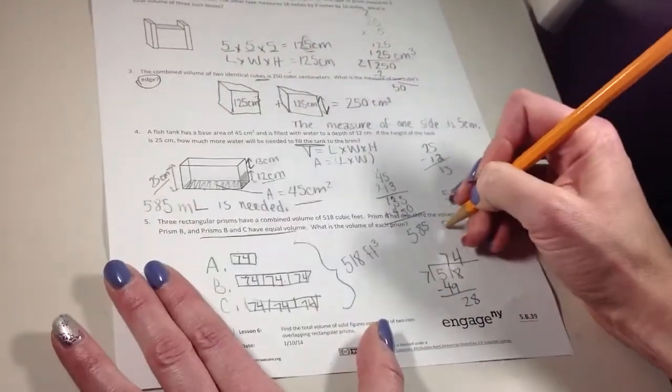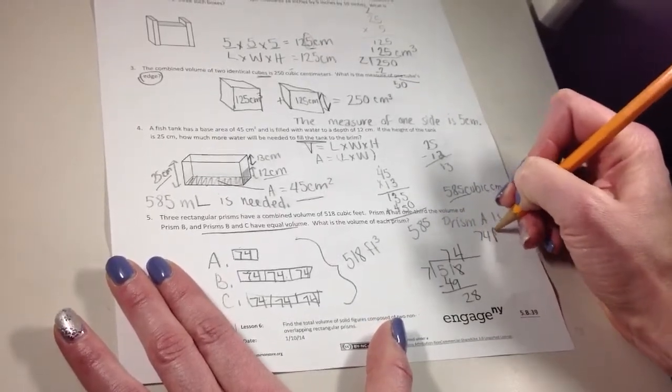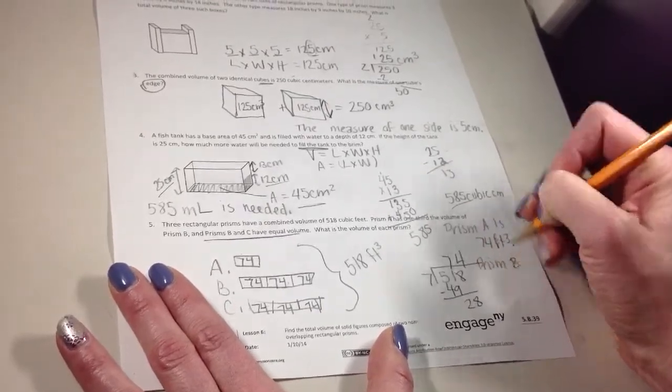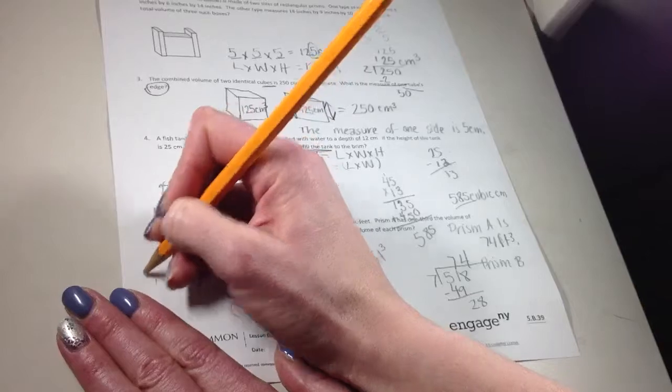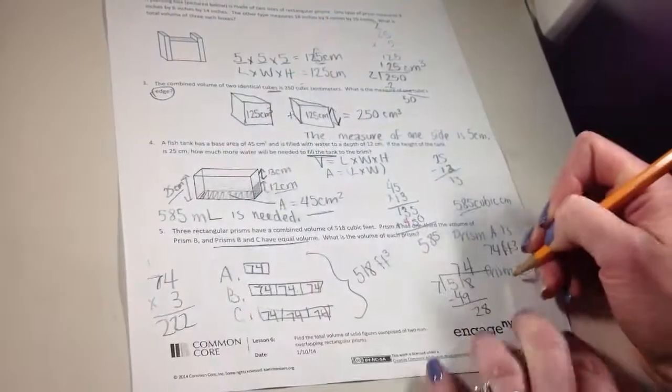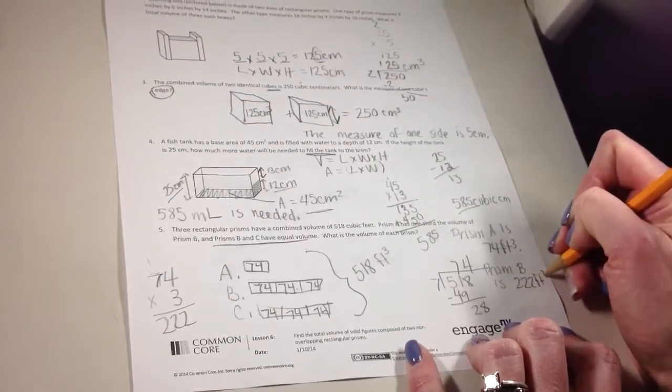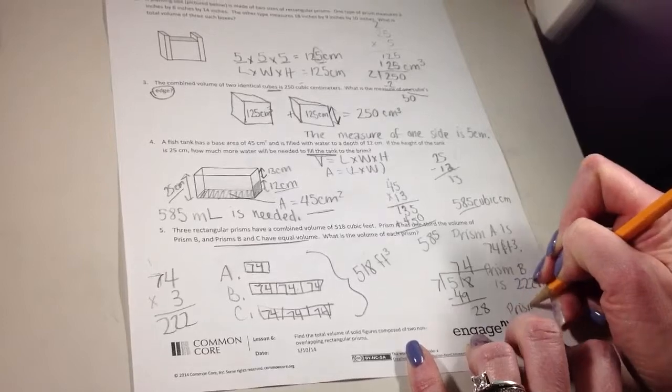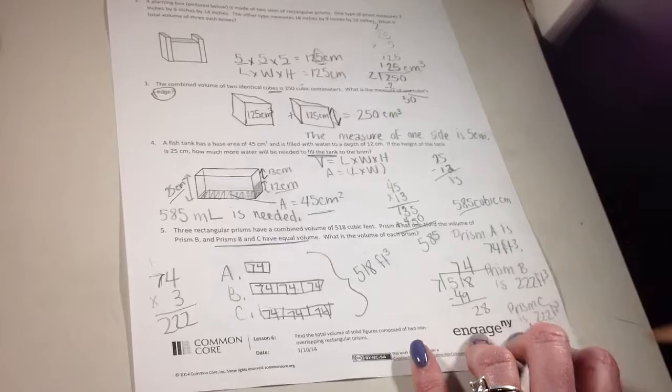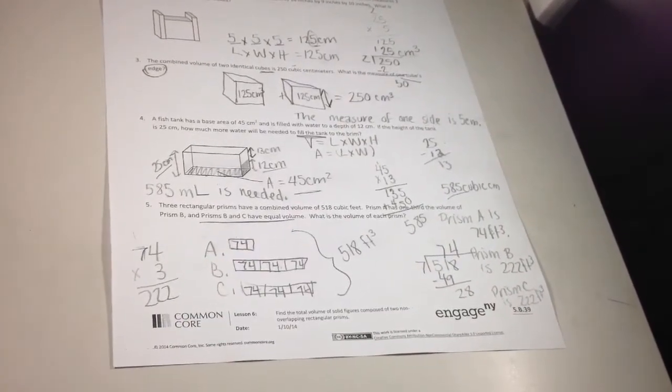So prism A is 74 cubic feet. So prism B, well, that's 74 times 3. So prism B is 222 cubic feet. And prism C is 222 cubic feet. Because again, prism B and C have the same volume.